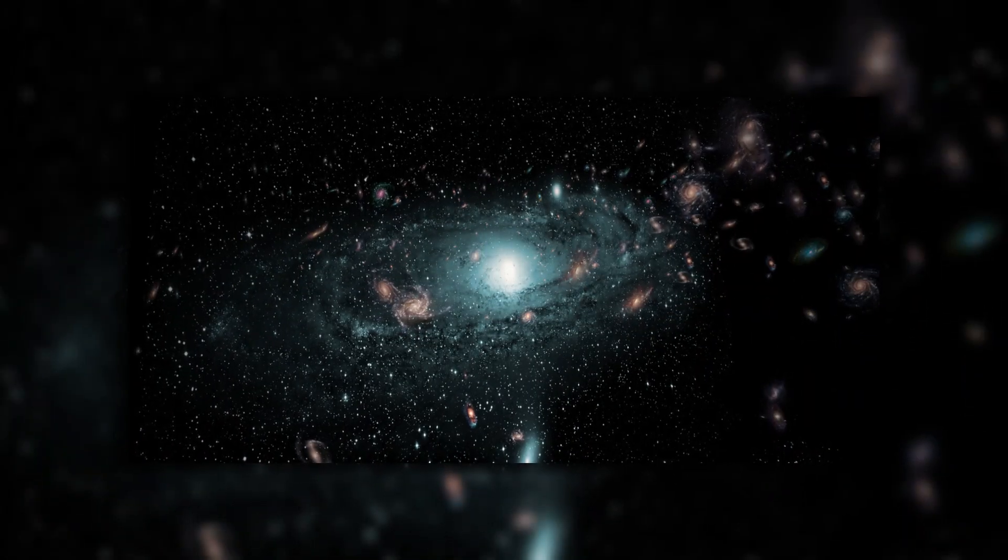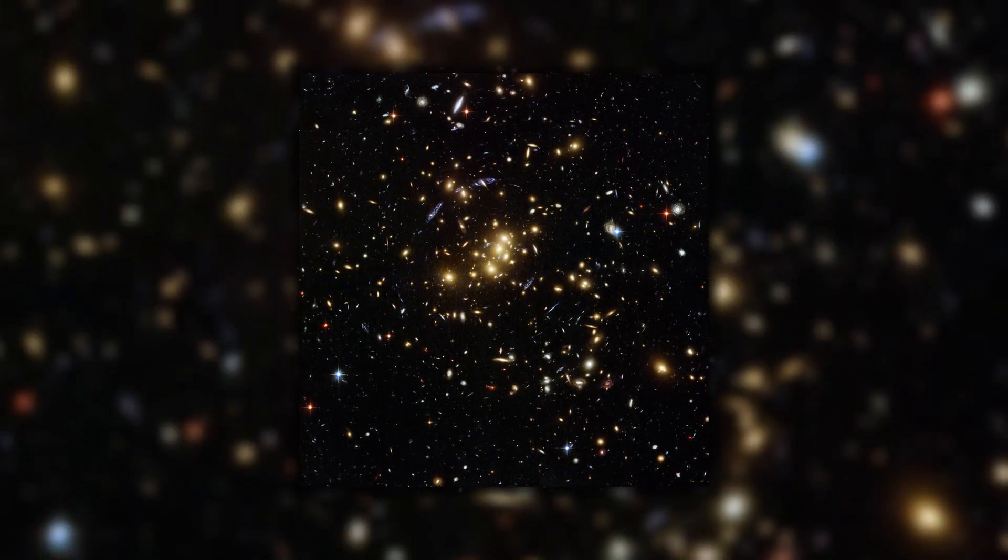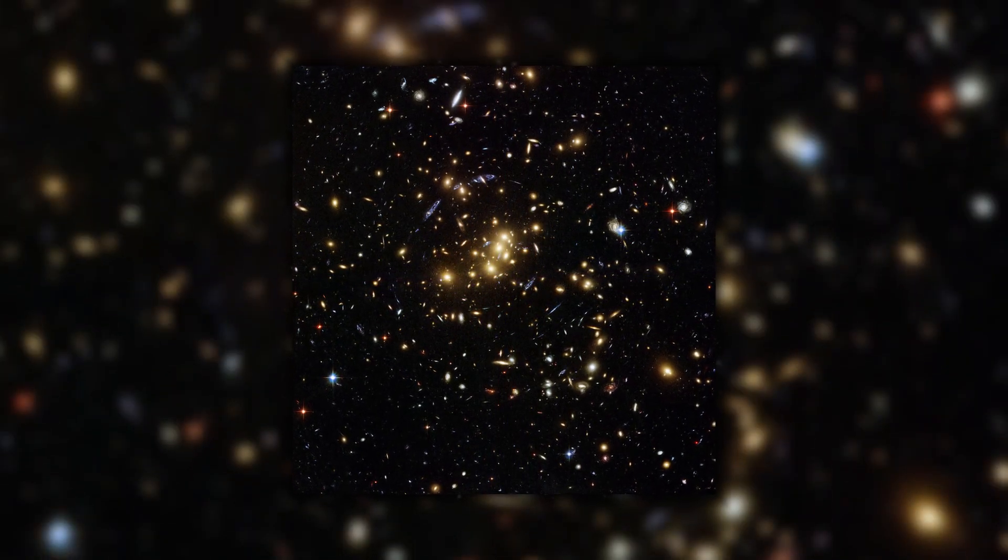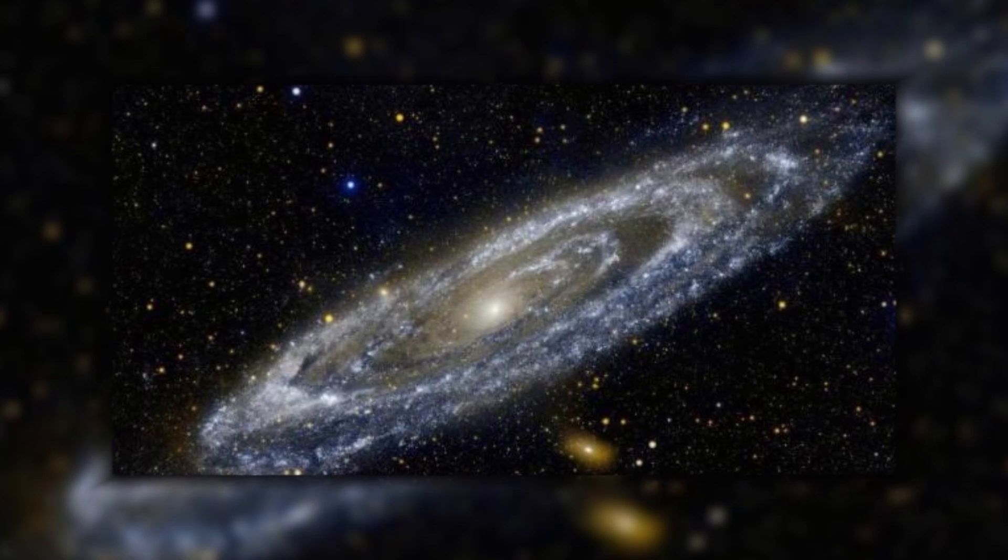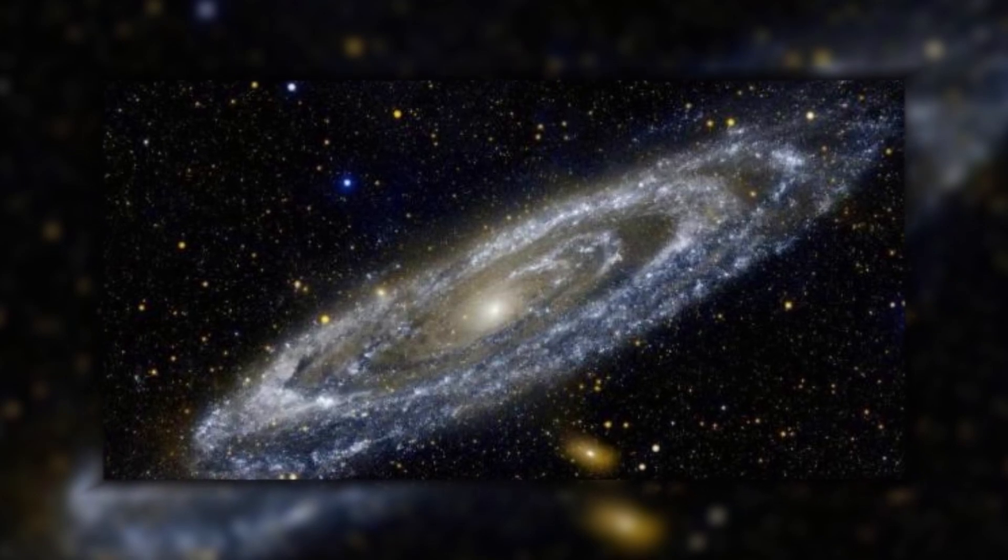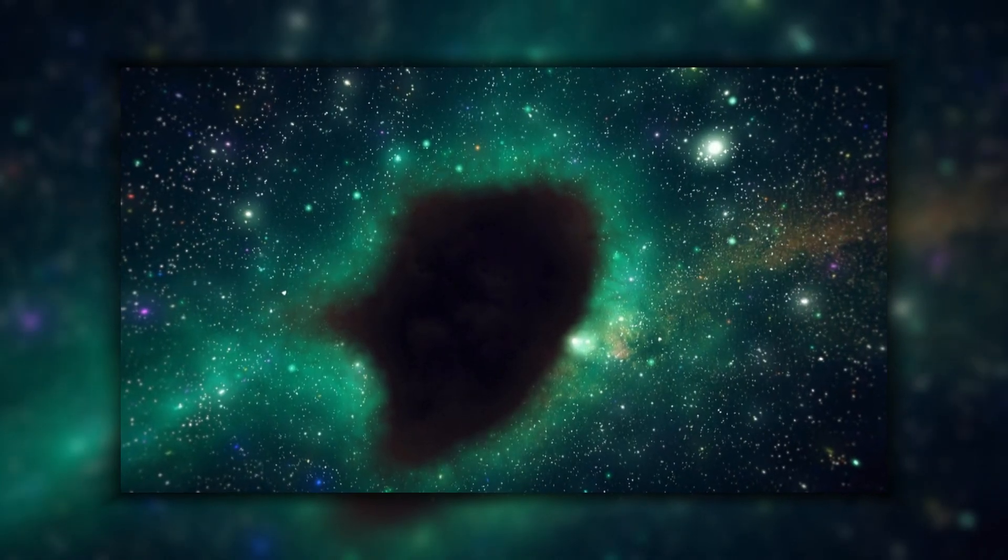The exact nature of the Great Attractor is still unknown. It's thought to be a massive supercluster of galaxies or even a void in space. Voids are vast regions of space that contain very few galaxies. The gravity of the surrounding galaxies pulls on the void, causing it to become increasingly empty. The void then acts like a giant vacuum sucking in nearby galaxies.